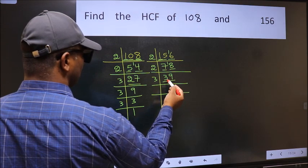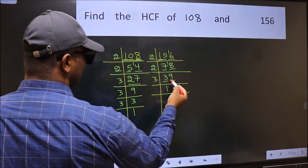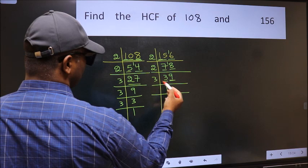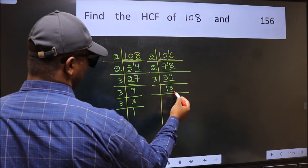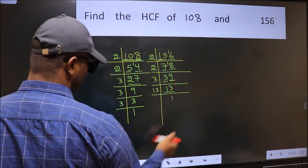First number 3, when do we get 3 in 3 table? 3 once is 3. The other number 9, when do we get 9 in 3 table? 3 times 3 is 9. Now 13 is a prime number, so 13 once is 13.